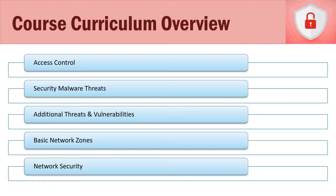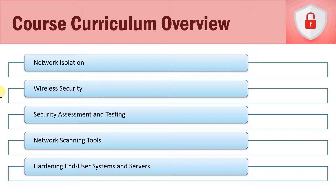Section ten is our midway point, and we start talking about network security specifically — hardware firewalls, all the different types of firewalls, intrusion detection and intrusion prevention, and virtual private networks. Section eleven focuses on network isolation and segmentation, covering VLANs, honeypots, and network address translation. Section twelve is all about wireless security — we cover wireless standards such as WEP, WPA, WPA2, and WPA3, enterprise mode versus personal mode, and common wireless security threats.